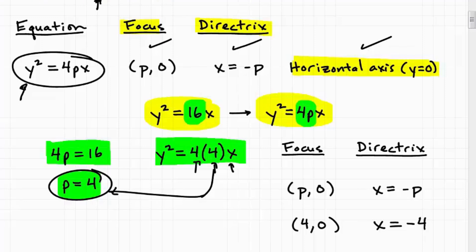But once I have this p value, I can easily determine what the focus and the directrix is, because the focus is going to be p, located at the point p, 0, or in this case, 4, 0, because I know that p is equal to 4. And the directrix will be the line x equals negative p, or x equals negative 4.